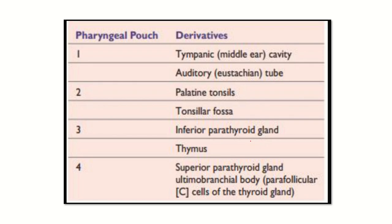To summarize the key points: there are four pharyngeal pouches — first, second, third, and fourth. From the third pouch, the inferior parathyroid develops, and from the fourth pouch, the superior parathyroid develops. Remember: third pouch gives inferior parathyroid, fourth pouch gives superior parathyroid.